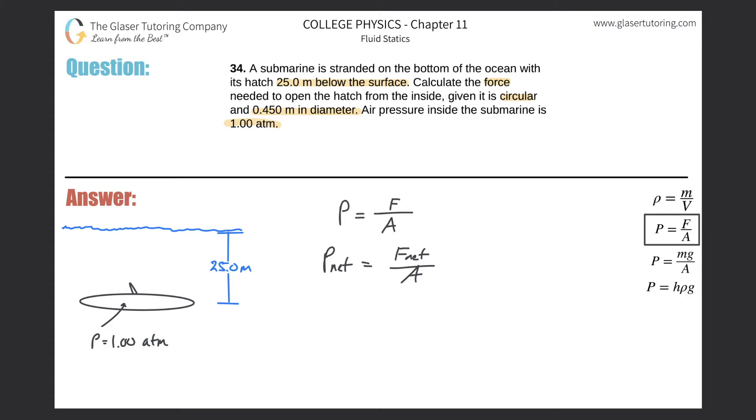So what pressures is this hatch experiencing? I'm sure there's two that are obvious, one that might not be as obvious. Pretend here's the hatch, and we realize that there's a column of water right above the hatch, and that column of water has a certain weight to it, and that's going to be a function of the height or the amount of water above it. We also know that there's a certain amount of pressure inside the vessel, so that's going to be pushing in the opposite direction.